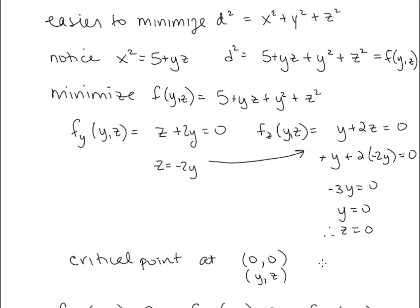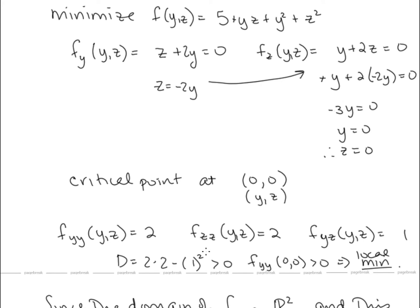We want to test this critical point to make sure it is a minimum of f. f_yy equals 2, f_zz equals 2, and f_yz equals 1. So the discriminant D equals 2 times 2 minus 1-squared, which is positive. We also have that our second y-partial is positive, so we have a local minimum. Since this is the only critical point in the entire domain of this function, it must also be an absolute minimum.